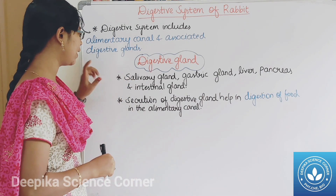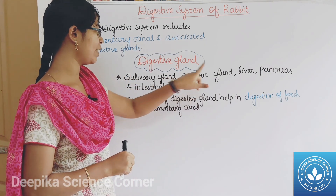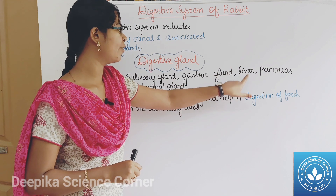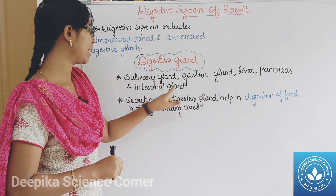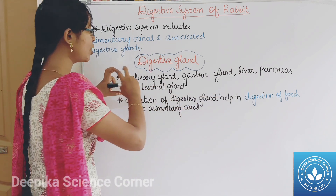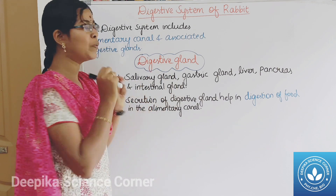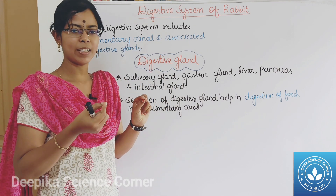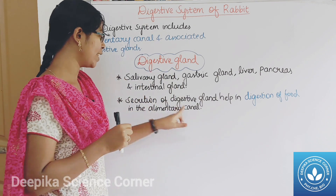Digestive glands: what are the digestive glands? Salivary gland, gastric gland, liver, pancreas, and intestinal gland. The secretions of these digestive glands help food digestion in the alimentary canal.